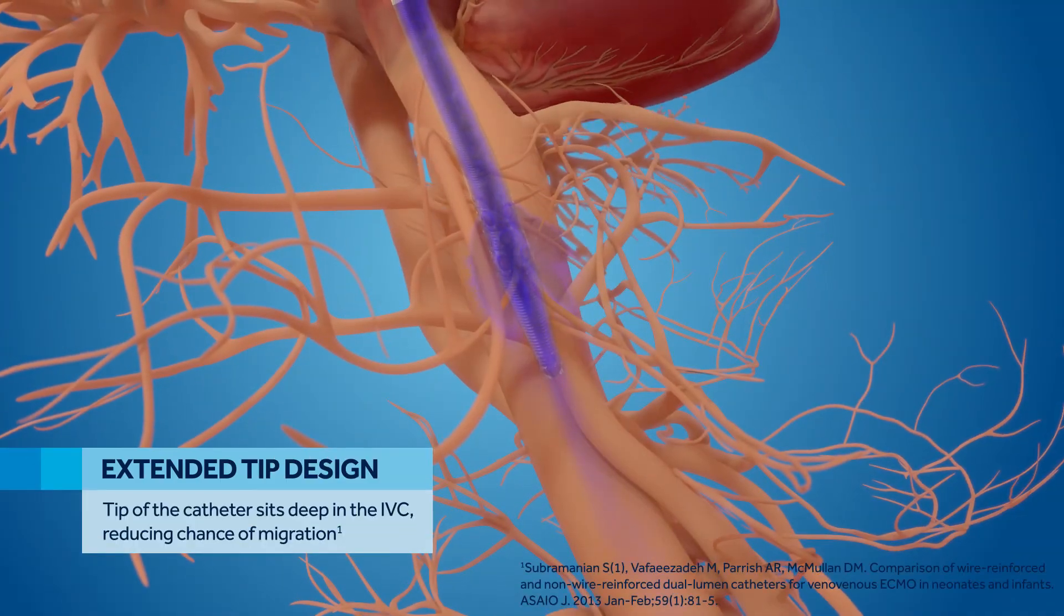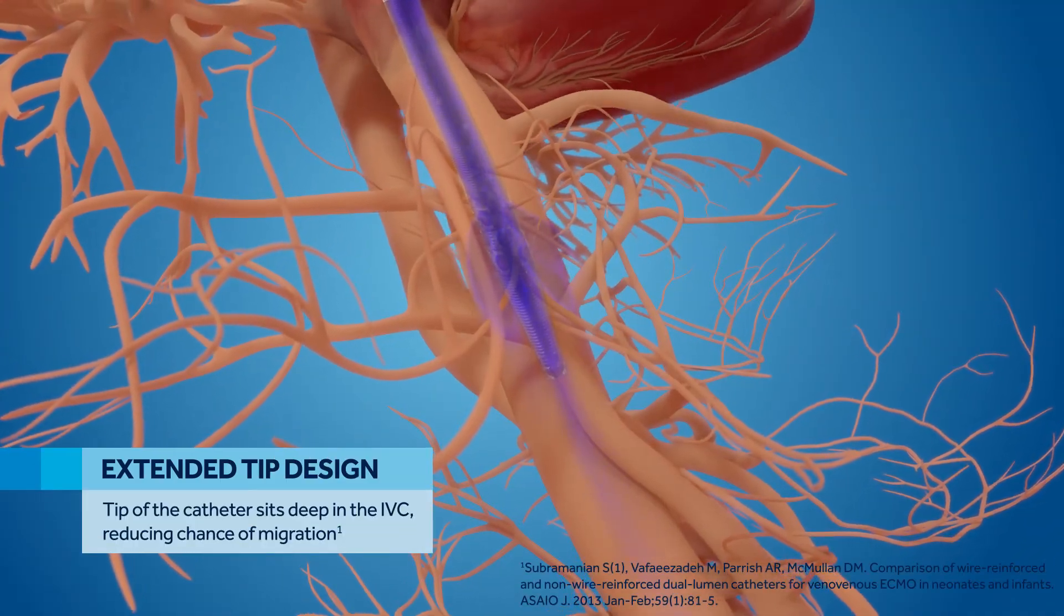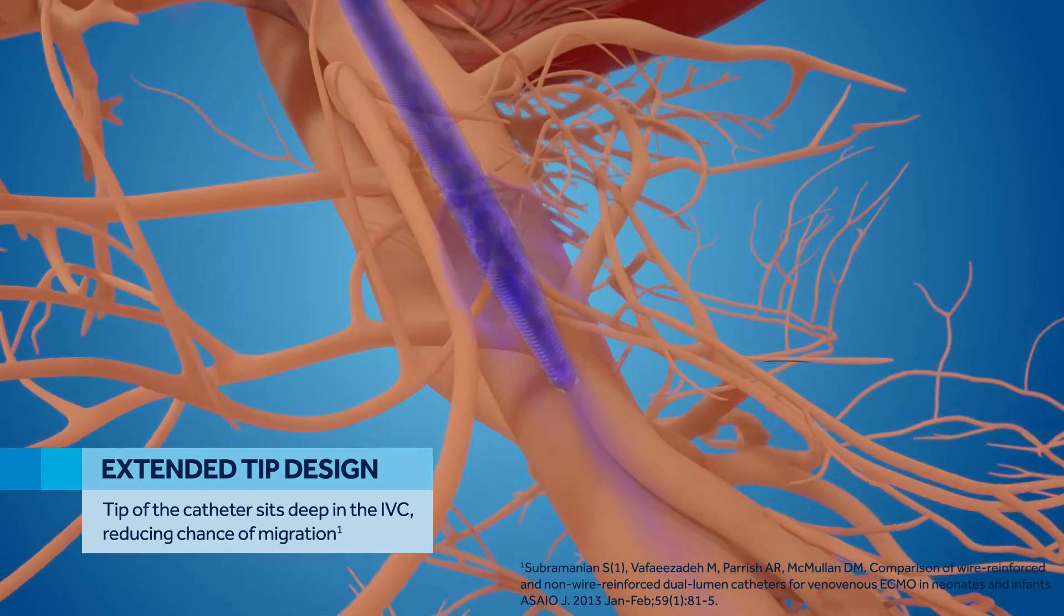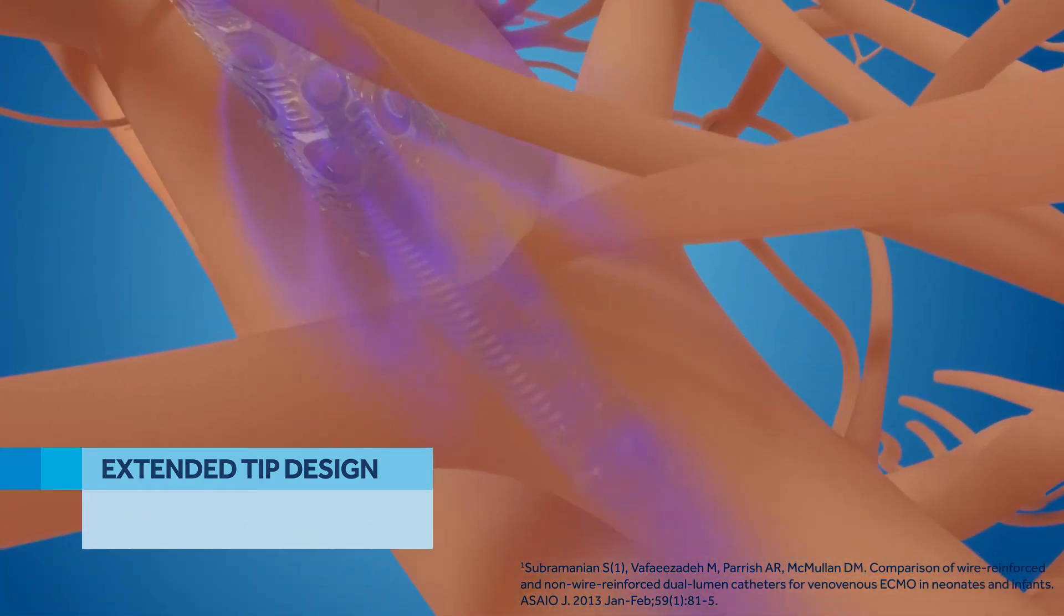The Crescent has an extended tip design that helps maintain position. The tip sits deeper in the IVC, reducing the chance of migration.